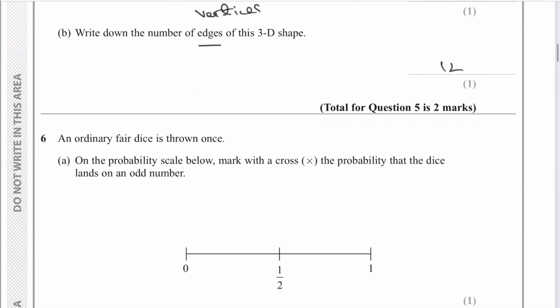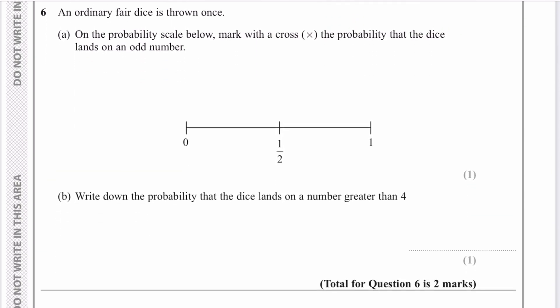Question six: a fair dice is thrown once. The important thing is it's a fair dice, so the probability of it landing on any number is going to be equal — one out of six, because there are six numbers on a dice. On the probability scale, mark with a cross the probability the dice lands on an odd number. A dice has numbers one, two, three, four, five, six, of which one, two, three are odd. So the probability of it landing on an odd number is three out of six, which is the point right in the middle.